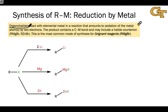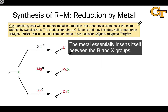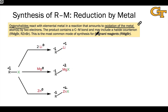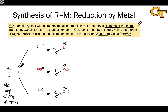A second strategy for the synthesis of organometallics involves the reaction of an organohalide with the metal zero species — the elemental metal: lithium, magnesium, or zinc. From a redox perspective, this amounts to oxidation of the metal to the +1 or +2 oxidation state, and reduction of the organohalide at carbon. This is the most common mode of synthesis for Grignard reagents: we start with the corresponding organohalide, where the R group can be alkyl, aryl, heteroaromatic, alkenyl, or alkynyl — hybridization doesn't matter. Pretty much any of these can be converted into the corresponding Grignard reagent by treatment with magnesium metal.